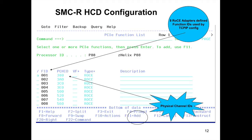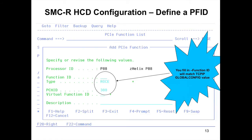I'm going to add a 9th RoCE Express card. I select 'A' next to any of the existing eight and hit PF11. On the add screen, I specify it's a RoCE card, enter the PFID I want — I'll use 9 since 1 through 8 are taken; the value can go up to 255. Whatever I add here goes into the global config in the TCP configuration to associate it with a particular stack. The next screen is where the physical network ID is defined.